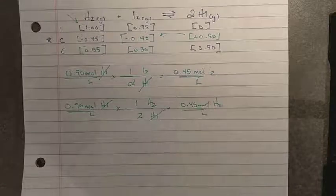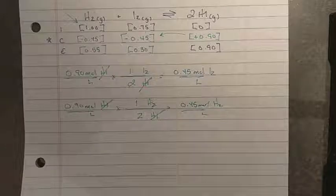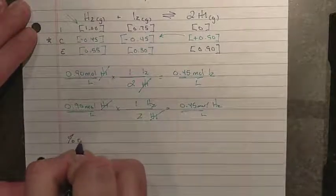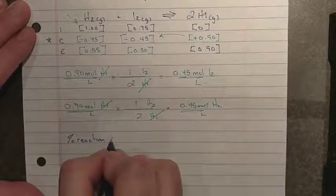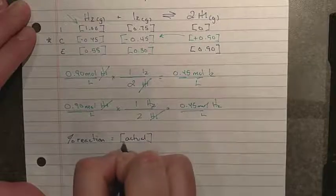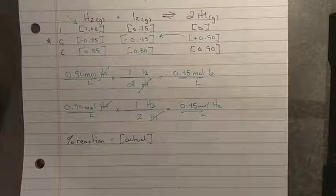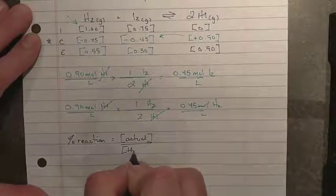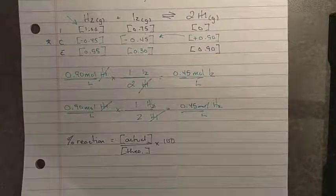There's my completed ICE table. Now I want to go do a percent reaction for this one. Percent reaction or percentage yield, if you wish, is just your actual concentration versus some sort of theoretical concentration.